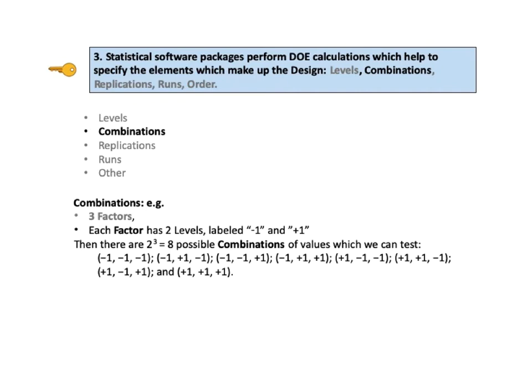The second element of DOE is combinations. If we have three factors, each with two levels labeled plus one and minus one, then there are 2 to the third — which equals 8 — possible combinations of values that we can test. The first would be negative one, negative one, negative one; then negative one, plus one, negative one; then negative one, negative one, plus one; and so on.